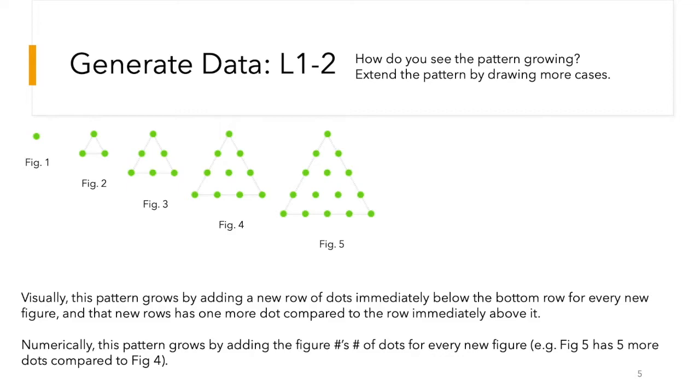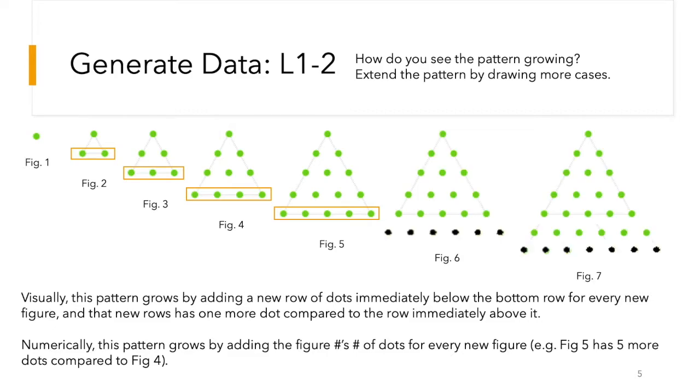According to this figure, some of my observations is that it grows by adding the figure number of dots for every new figure. For example, figure five is five more dots compared to figure four, and those new dots are always on the same row, and that row is on the bottom. Circled in orange, this is just to make it clear exactly what is being added for each figure. So now we are going to extend the pattern. Figure six is six more dots, figure seven is seven more. So these are the two new cases that have been extended.